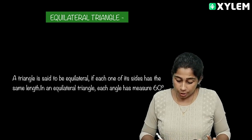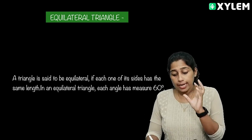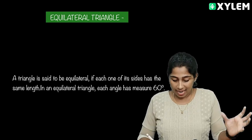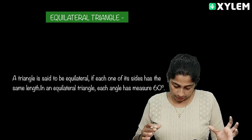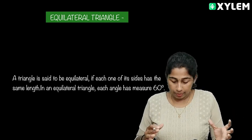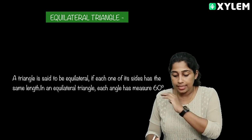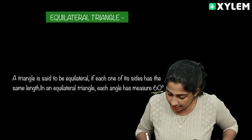A triangle is said to be equilateral if each of its sides has the same length. In an equilateral triangle, each angle measures 60 degrees.